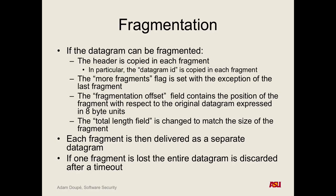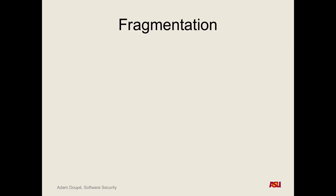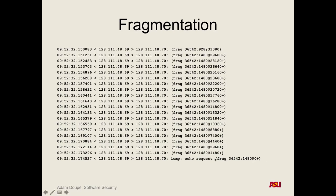Each fragment is routed independently just like any other IP packet. This incurs risk: if any one fragment gets lost, the entire packet is gone — no retransmission, no checksum recovery. Here's a TCP dump output showing fragmented packets from 128.111.48.69 to .70 — these are all fragmented packets, and at the end we can see it's an ICMP echo request — a ping request — and they can arrive in any order.